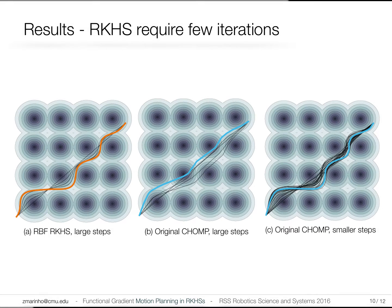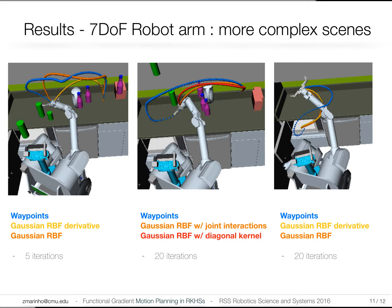In practice, planning in RKHS allows us to use just a few time points to represent the trajectory, and we can take larger step sizes without breaking smoothness. We converge in fewer iterations compared to the previous work with CHOMP, which need more iterations and more supporting points to achieve a similar solution. We also show some results in more complex scenarios in higher dimensional spaces.